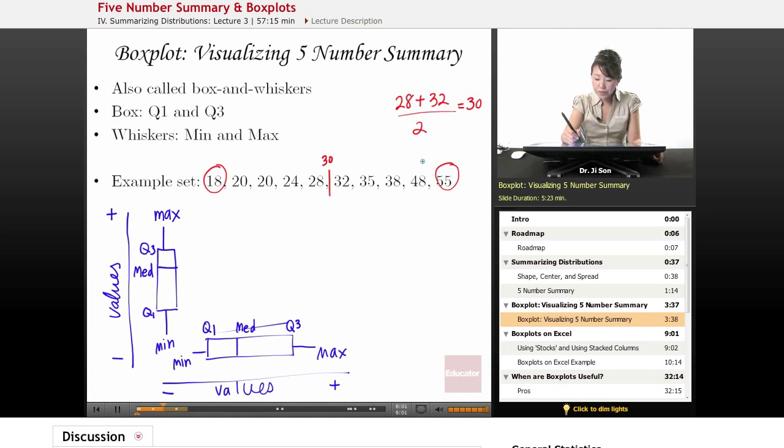And then let's find Q1 and Q3. So what's in between here and here? Actually, I miscounted. Let's see. So we count the 18 as the border, the 30 as the border, so each side gets 2. So Q1 is right in here. That should be 22.